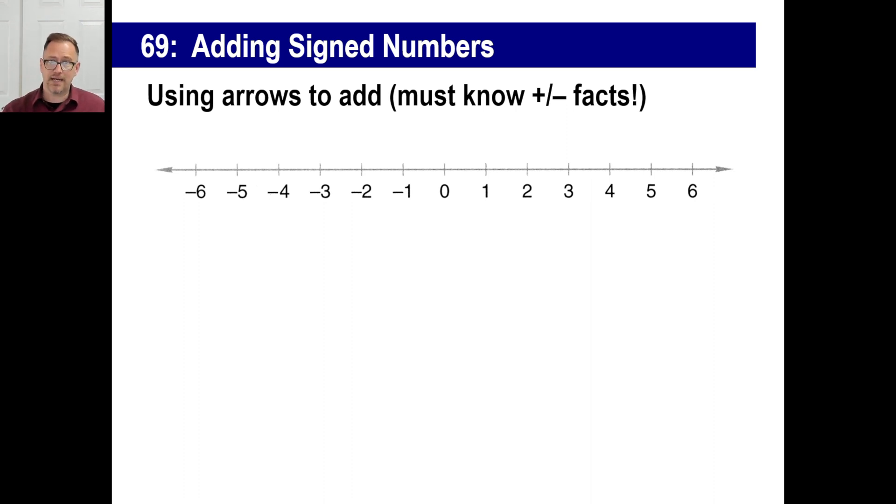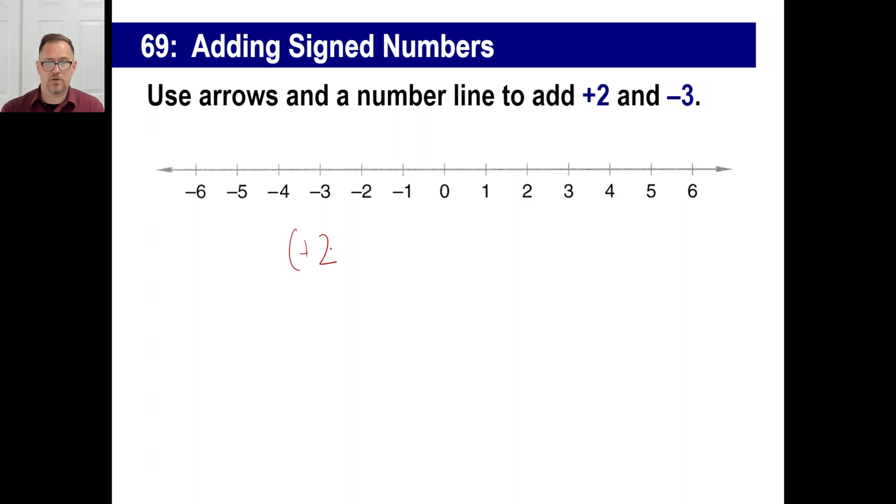So using arrows to add, you got to know your plus and minus facts again. So make sure you do that. In other words, what you're going to do is it'll say something like this. Use arrows and a number line to add positive two and negative three. So in other words, we're going to add positive two plus negative three. And real quickly, you can either say this or write this like this. There's a two and we're going to add negative three. You can either go like this. Oh, positive two plus negative three. That's one way you could write it. Another way you could write it is you could just go two and then minus three, a two and a negative three together gives you a certain number.